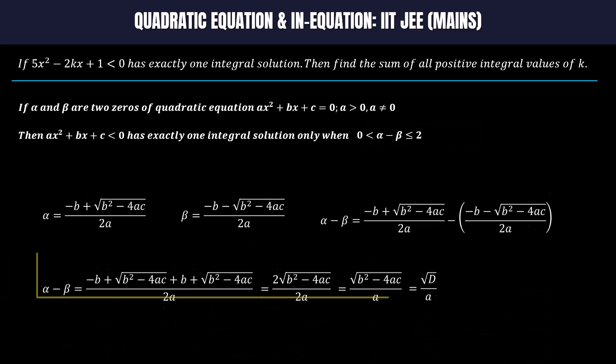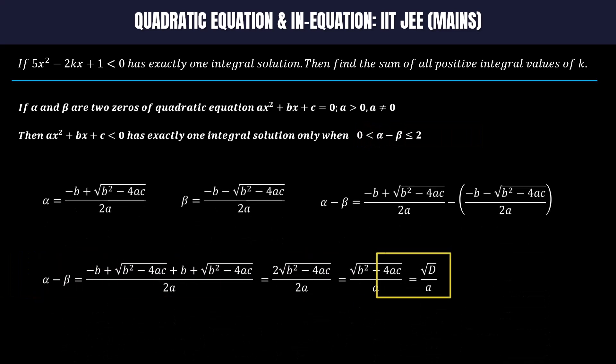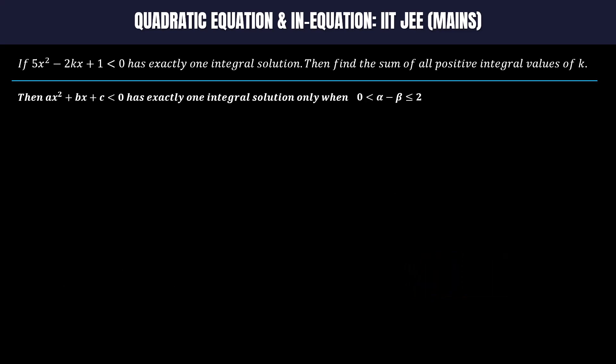You can easily calculate α - β, which equals the square root of the discriminant over the coefficient of x squared. This implies that for the given quadratic inequality, √d/a is greater than 0 and less than or equal to 2.